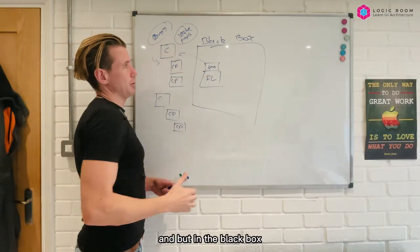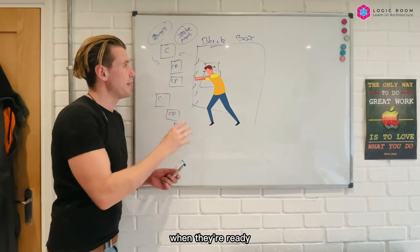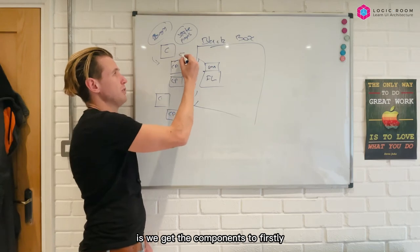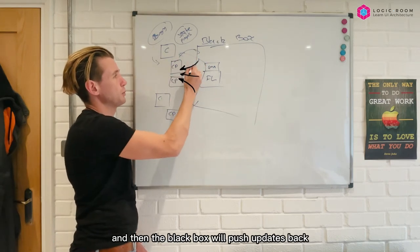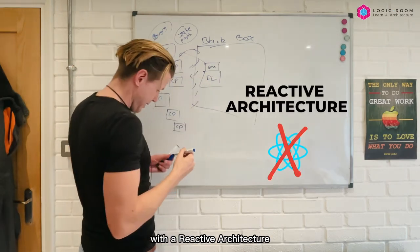But in the black box we must be able to push out updates back to the components when they're ready. And so what we do is we get the components to firstly notify the black box that they need updates, and then the black box will push updates back. And this is done with a reactive architecture.